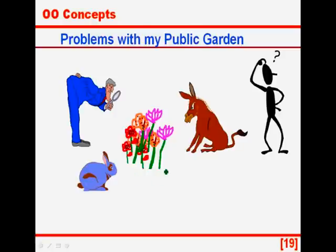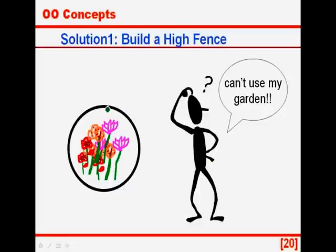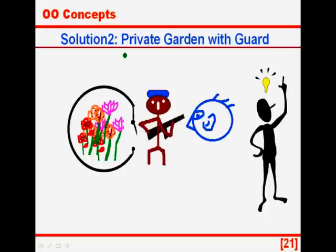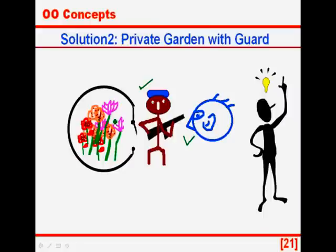Suppose I have a garden in which I am growing different kinds of flowers. The garden is public, and that creates a problem — it faces a threat from people, from donkeys, and from rabbits which might attack the garden in different ways. Suppose I build a very high fence around my garden and enclose it completely. My flowers are safe but I have a new problem: I cannot use my own garden. Now the next solution: I hire a guard and give proper instructions as to who is authorized to use the garden and who is not. Outside people who come to use the garden have to take the permission of the guard to be allowed to do any operation on the garden. This keeps my garden safe and I can access the flowers for my own use.